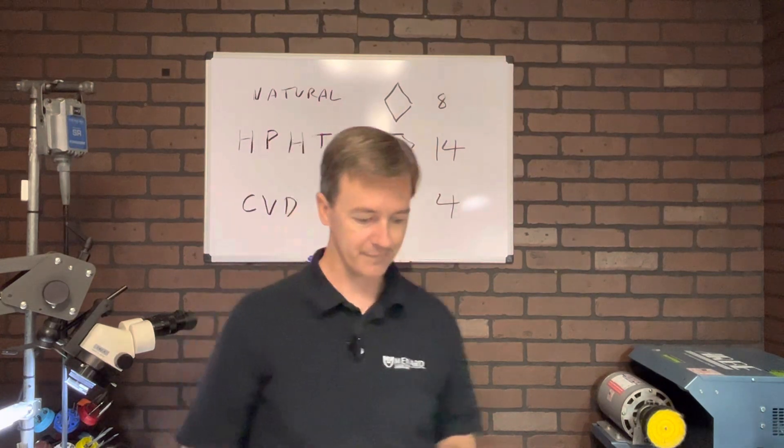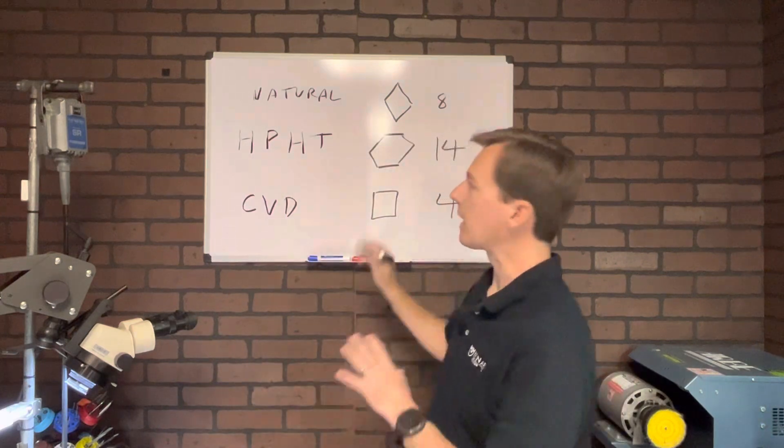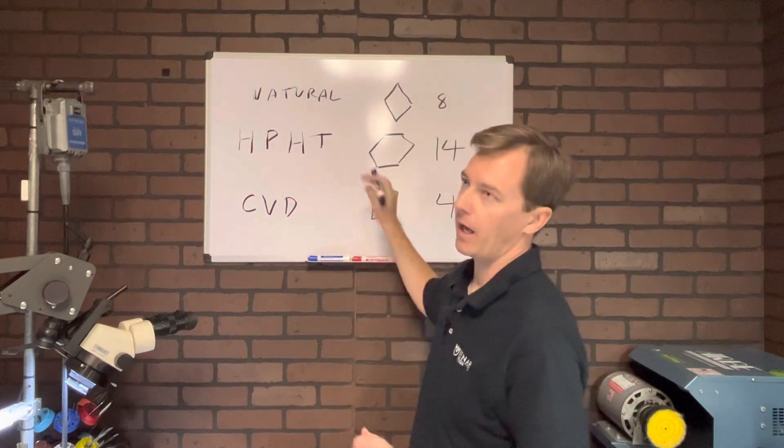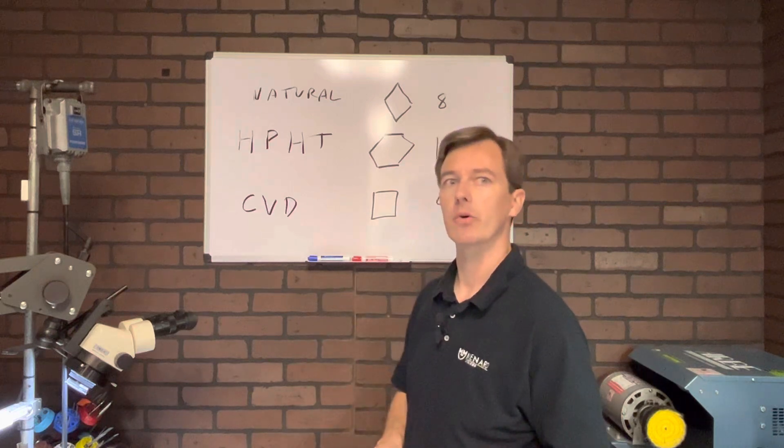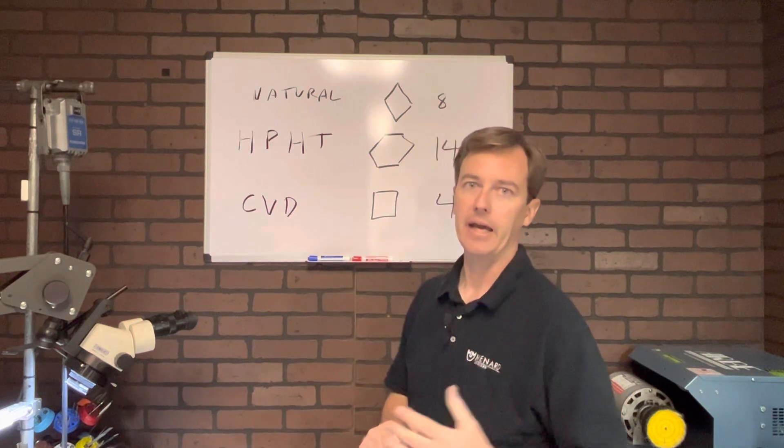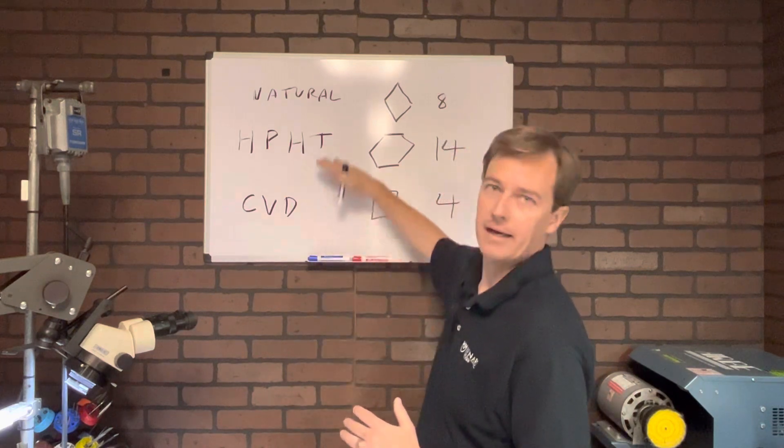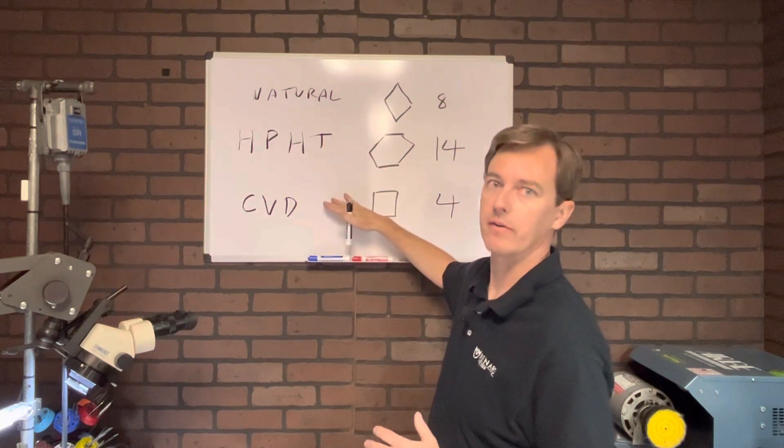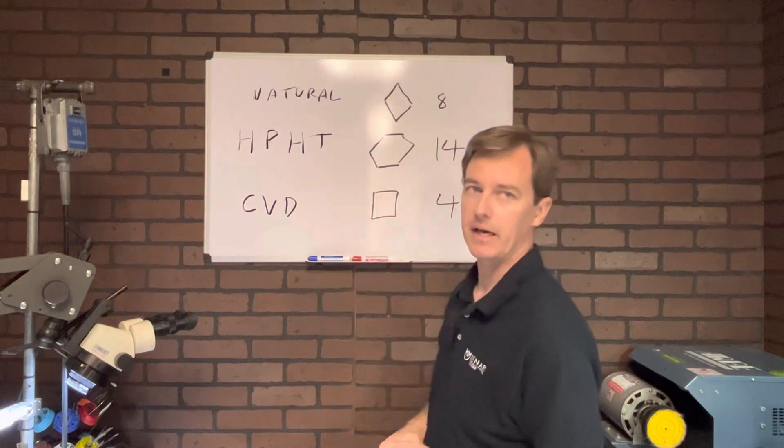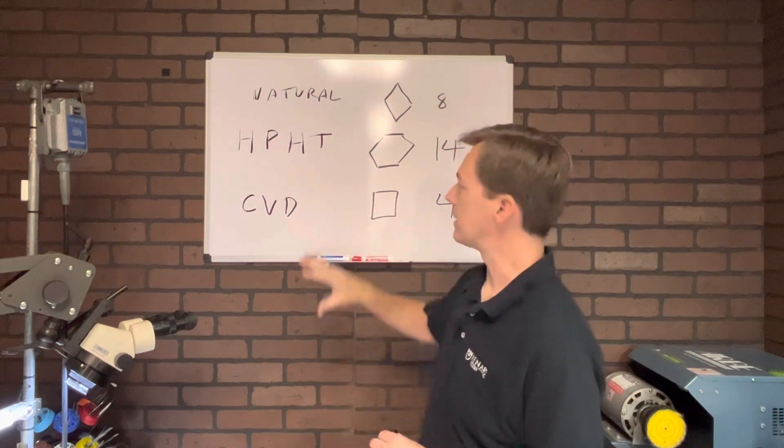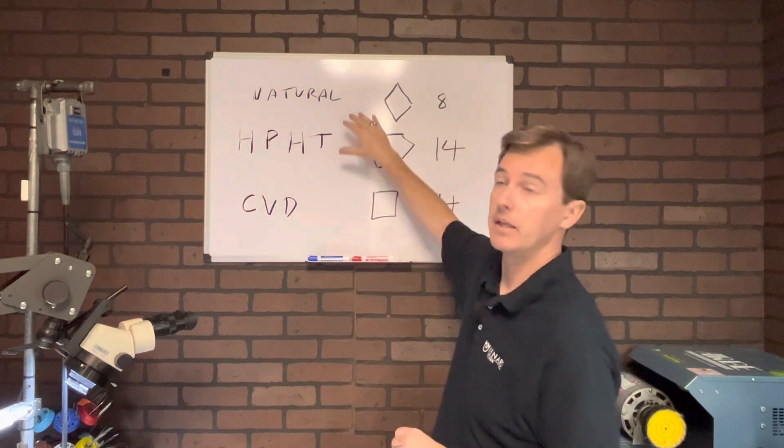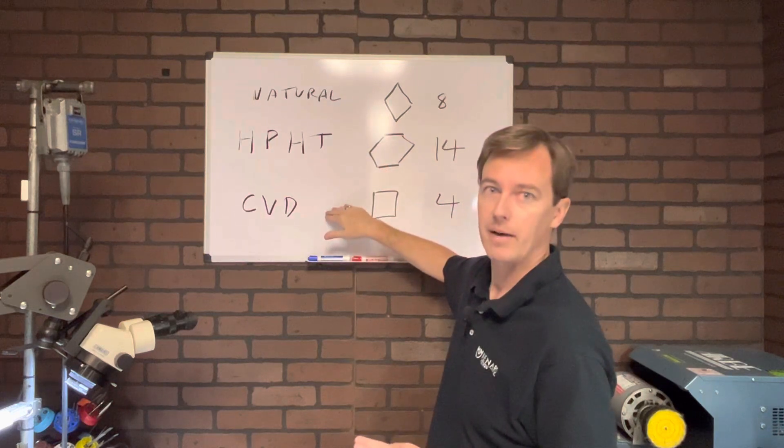So some people claim that they could see with their naked eye the difference. Most salespeople in jewelry stores can't tell the difference between a cubic zirconia and a diamond, much less the different crystal structures of the way a diamond was grown. That's why that equipment is so expensive. It's because it's doing this on the molecular level, determining how the diamond was grown.